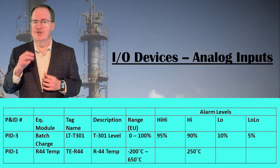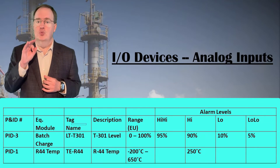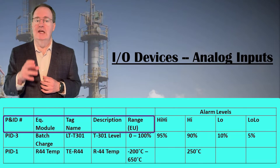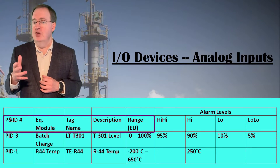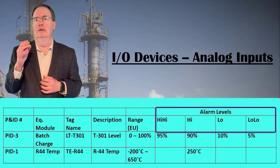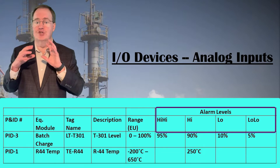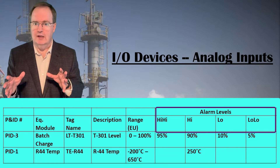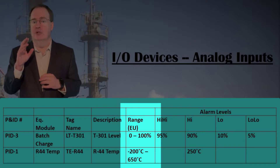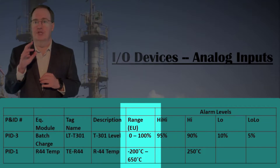Make tables of IO devices according to the type of IO. For analog inputs, you'll want a cataloged P&ID number, equipment module, tag name, description, range and units, and the four standard alarms: high high, high, low, and low low. If a device doesn't have alarms or just some of them, leave the rest blank. The instrument range and units are essential to allow scaling of the inputs into useful real number variables in the controller.